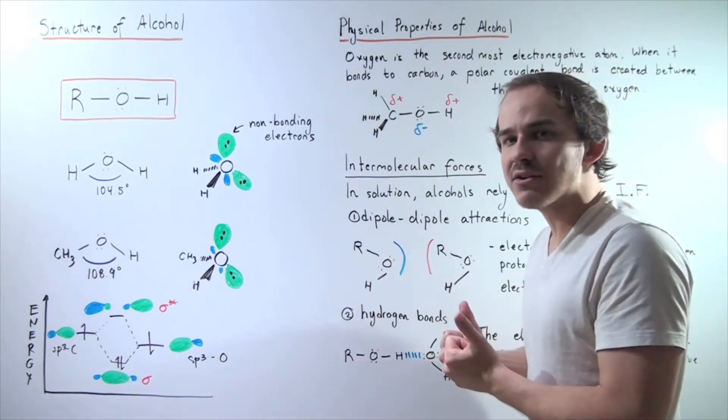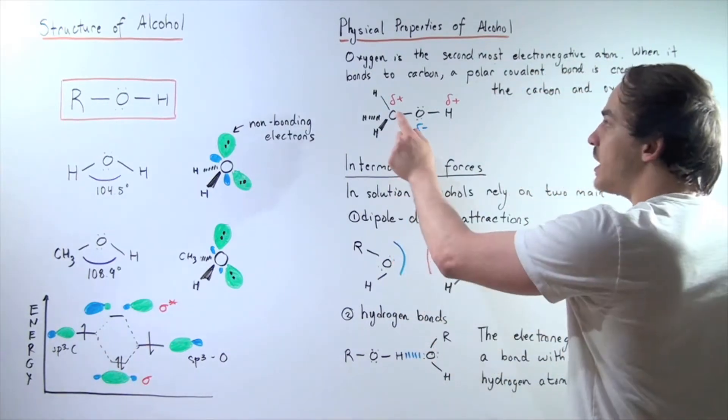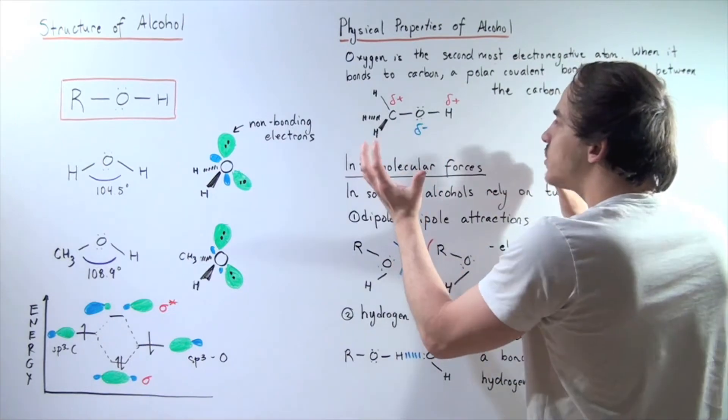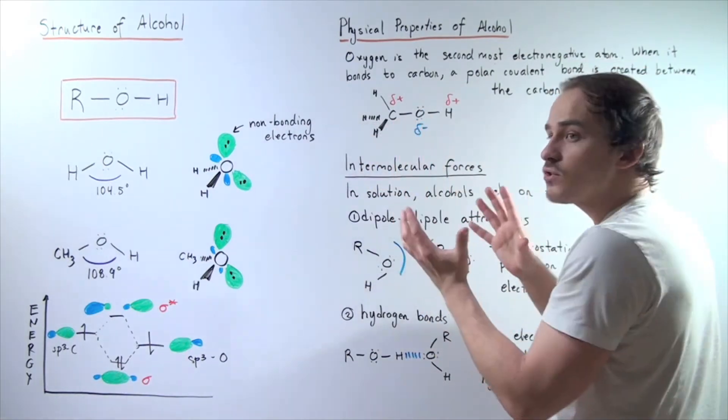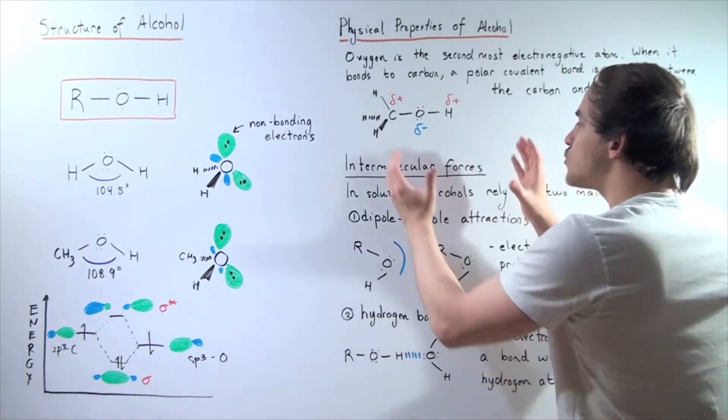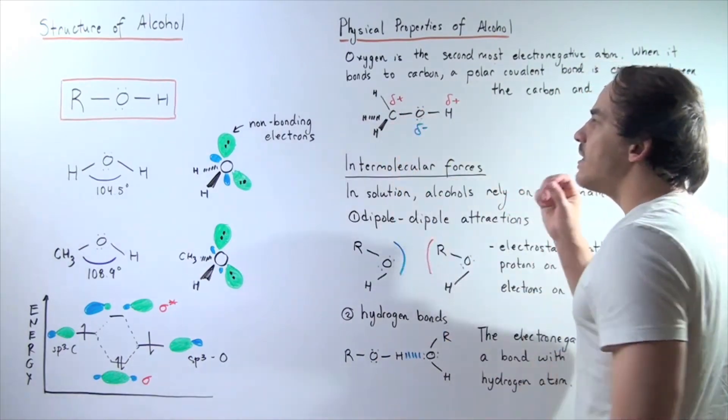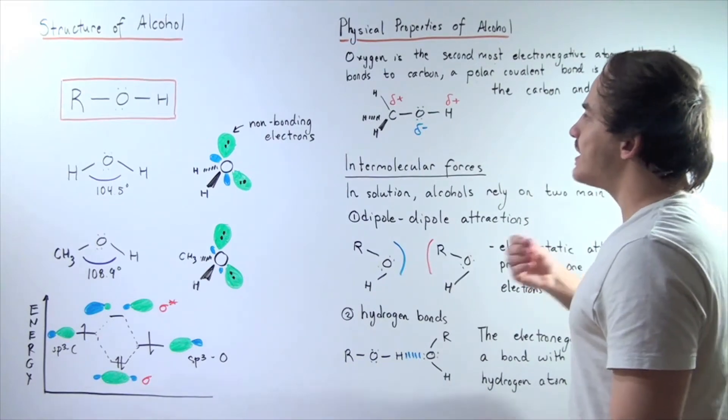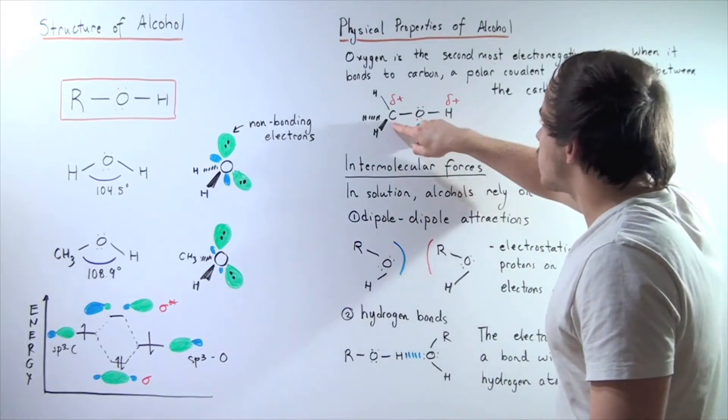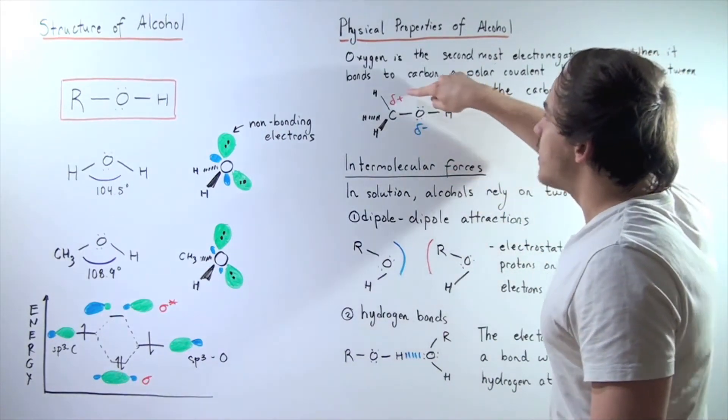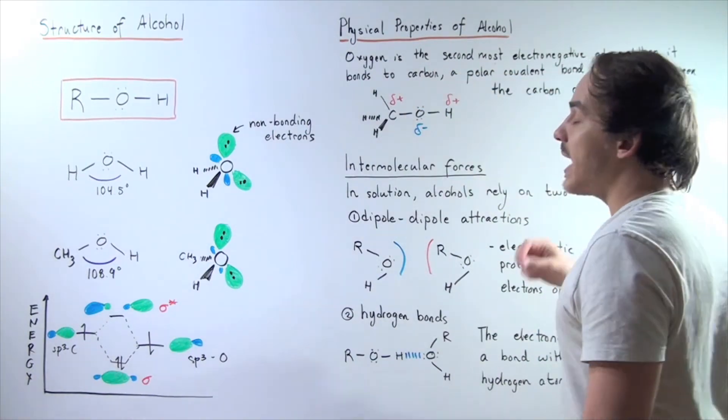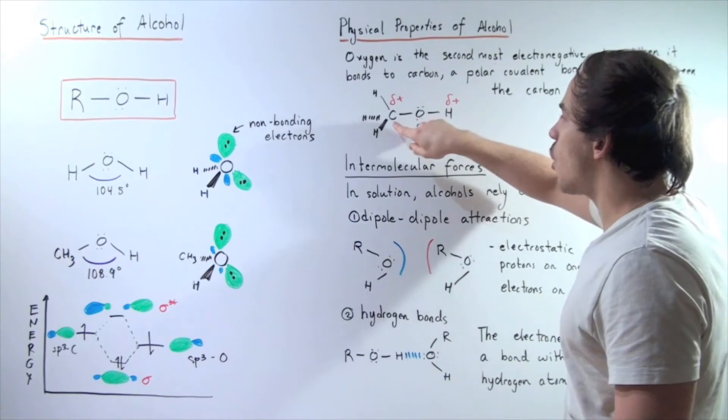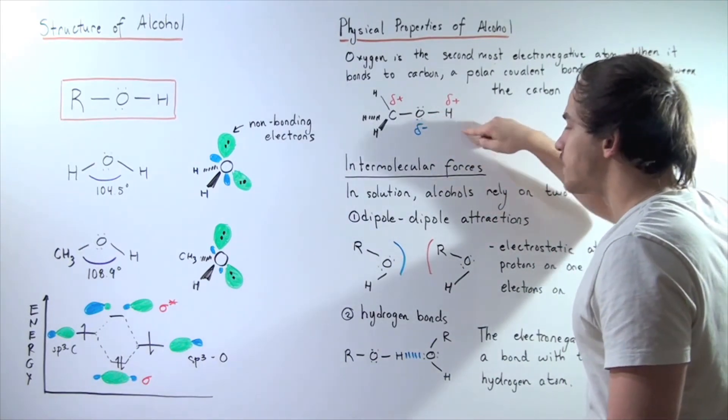because oxygen is more electronegative than carbon or H, it will pull those electrons more strongly than either of these two atoms. Our electrons will be closer to the oxygen. Our electron density will be closer to the oxygen. This will create a partial negative charge on the oxygen. Since we're taking electrons away from carbon and the H, there will be a partial positive charge on both of these atoms, on the carbon and the H.